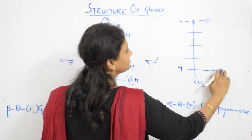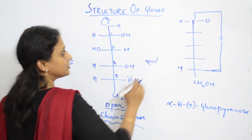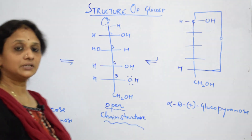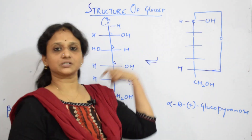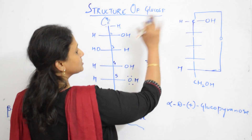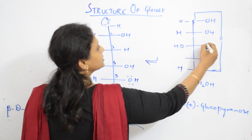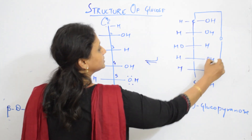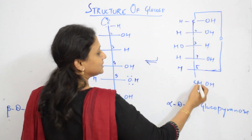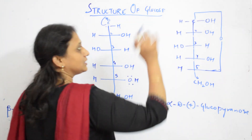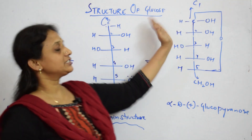This forms a ring structure and the hydrogen shifts to the first carbon. Remaining substituents are all the same: H and OH, OH and H, and H and OH. This is C1, C2, C3, C4, C5, C6. Now let us write what is at C1 for alpha: H is on this side and OH is on the other side.